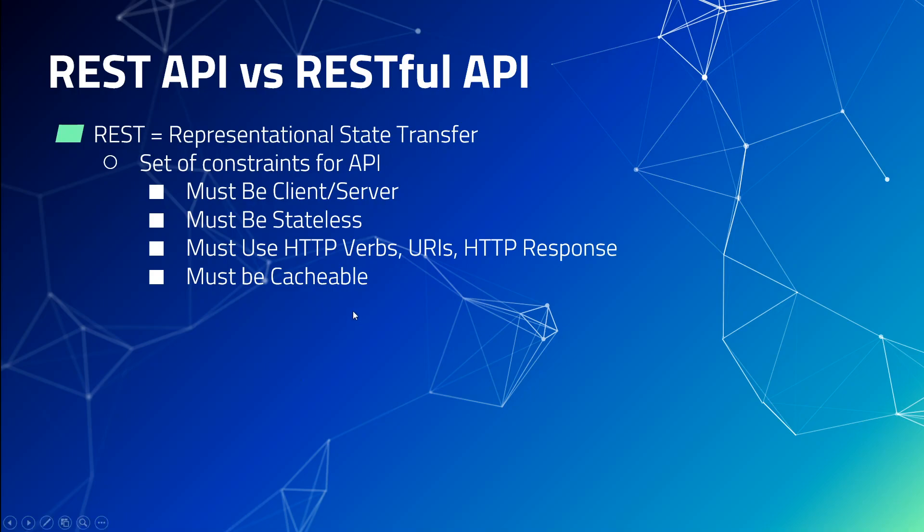The first constraint is that the API should work in a client-server environment. This client and server need boundaries for how they operate — which one will be a client and which one will be a server. The client is the one who makes requests, and the server is the one which receives and processes the request and then sends the response back.